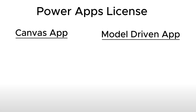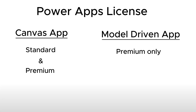Licensing is an important criteria when deciding between a Canvas App and a Model Driven App, and there is an important difference between the two. Canvas Apps are available on both PowerApps standard and premium licenses. Model Driven Apps, on the other hand, are available only on the premium license. So you will need a premium license — not only you as the developer, but your users will also need a PowerApps premium license to be able to use the application.